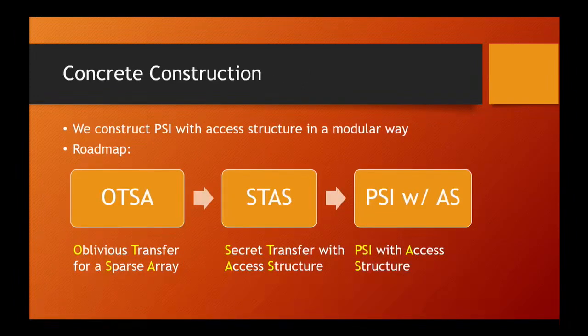We show how to construct PSI with access structure in a modular way. To this end, we study two intermediate protocols as basic building blocks. The first one is called oblivious transfer for set array, or OTSA. And the second one is called secret transfer with access structure, which is called STAS.